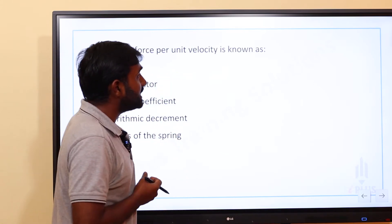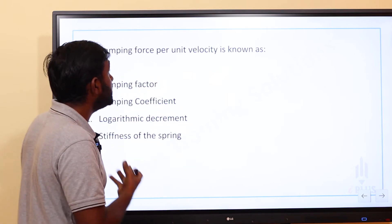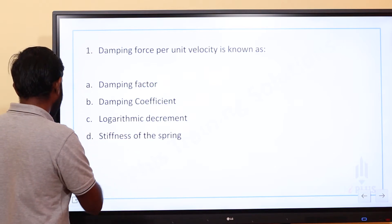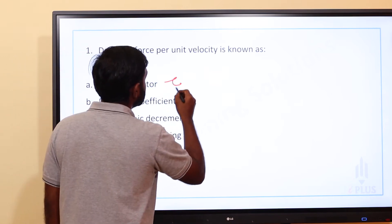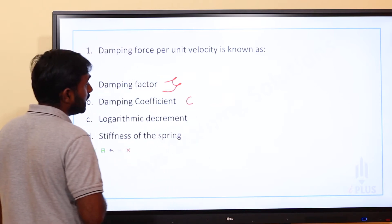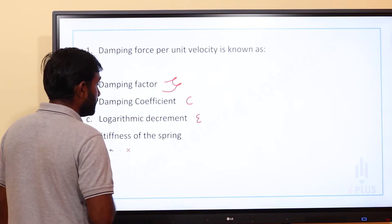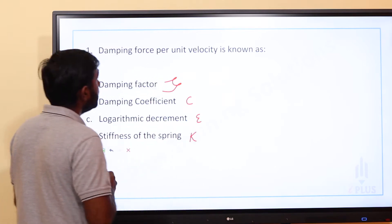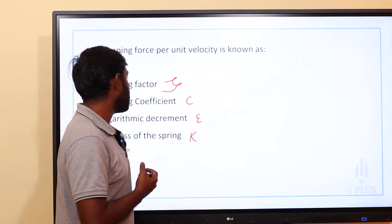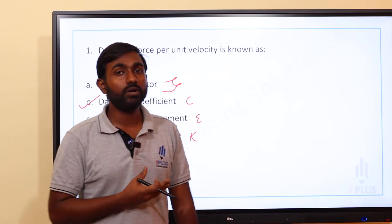Damping force per unit velocity is known as dash. The options are: damping factor, damping ratio (Z), damping coefficient (C), logarithmic decrement (epsilon), and stiffness of spring (K). Damping force per unit velocity is known as damping coefficient, and the damping coefficient is C.